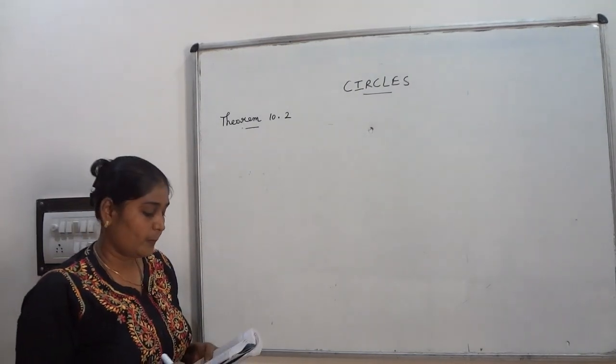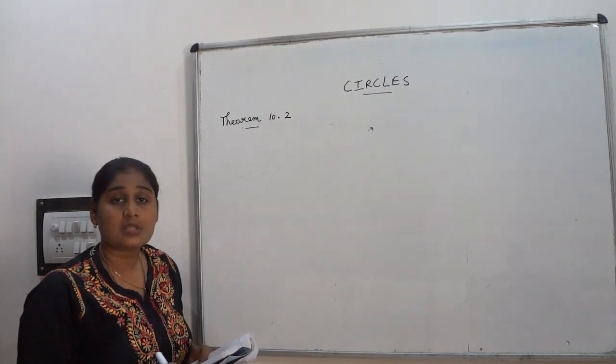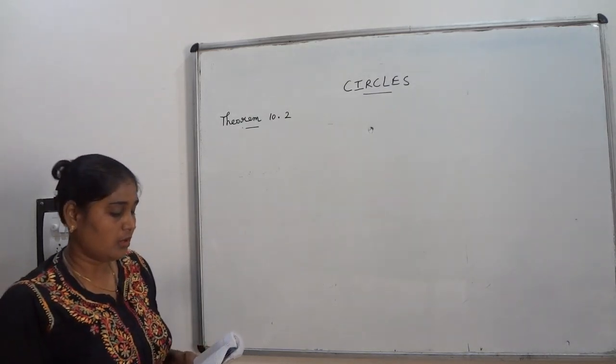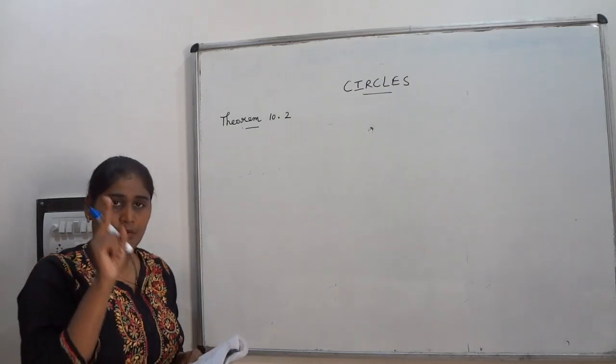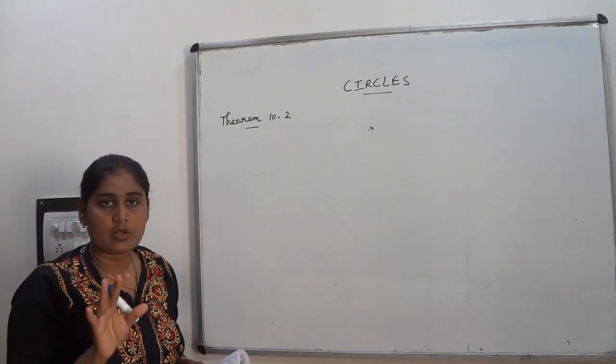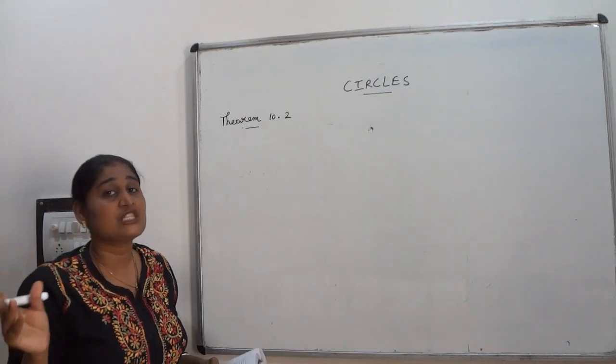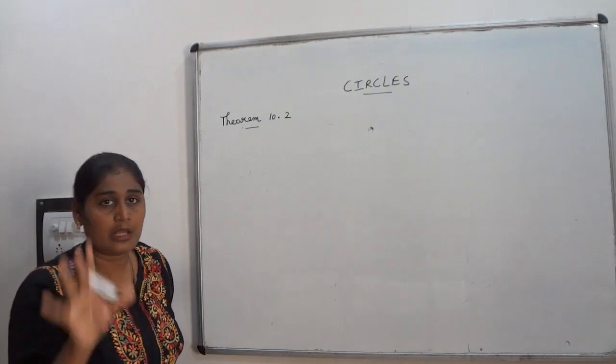Theorem 10.2: The length of tangents drawn from an external point to a circle are equal. Here what is given to you? Two tangents given to you as well as the external point of a circle also given to you. You have to show that the length of the tangents from an external point are equal.